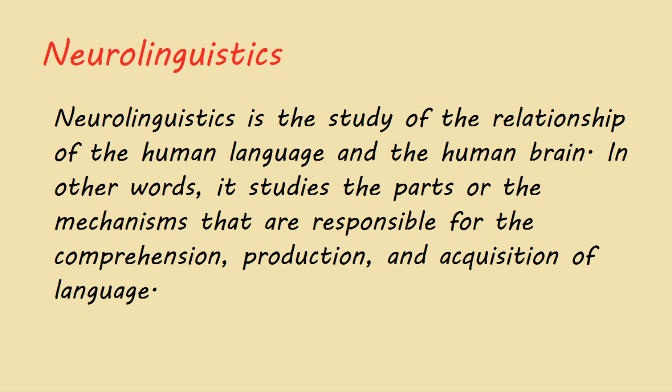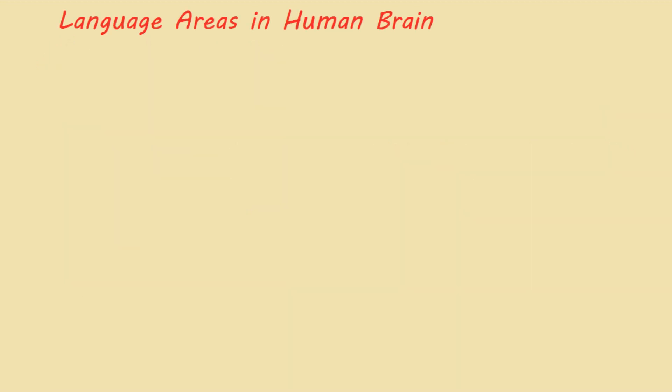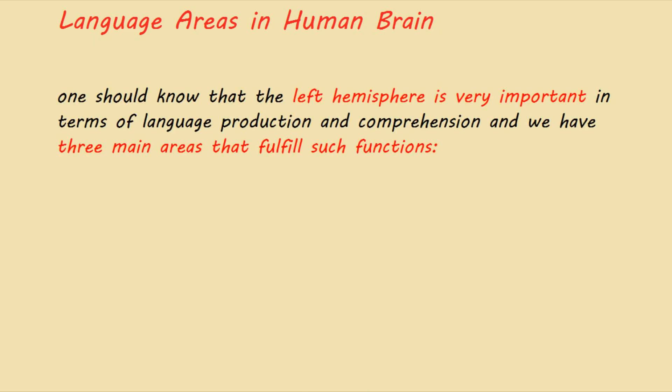Now we move to the most important point of today's lecture: language areas in the human brain. You should know that the left hemisphere is very important in terms of language production and comprehension. We have three main areas that fulfill such functions. Many specialists believe that the left hemisphere is where language is located — everything related to language is in the left hemisphere.